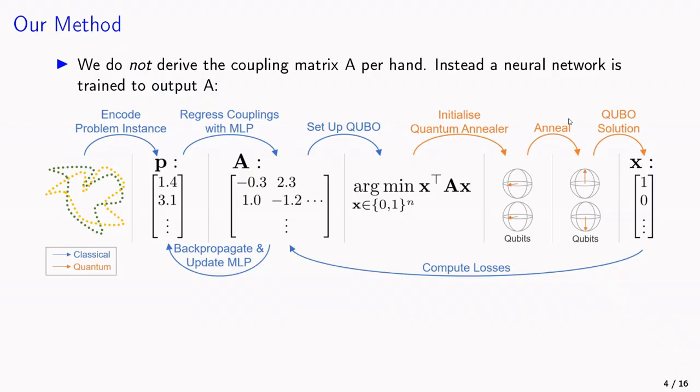This is the reason why we do not derive the coupling matrix A by hand, but instead, in this work, we train a neural network to output the coupling matrix.